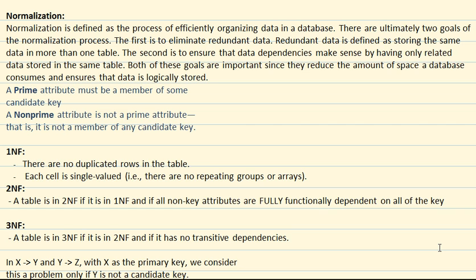All this time we were learning how to represent data first, like a blueprint, before going and working towards the actual database. It's like laying out a plan. Right now we are going to be focusing on making the database more efficient and less space consuming. The first goal of normalization is to eliminate redundant data, and the second is to ensure that data dependencies have only related data stored in the table.